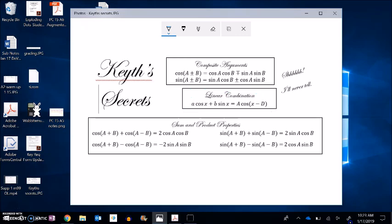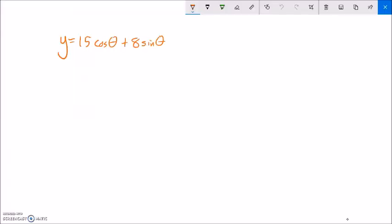So in order to do this type of problem, I'm going to start by drawing a triangle. And I know that cosine is about x, so I'm going to have it go 15 in this direction. Sine is about y, so I'm going to have it go 8 in that direction.